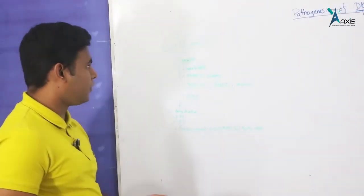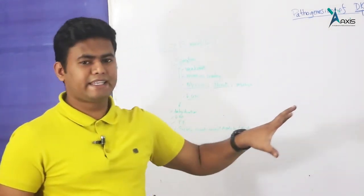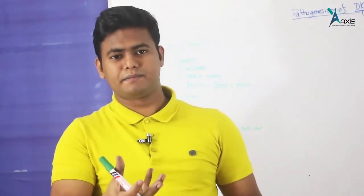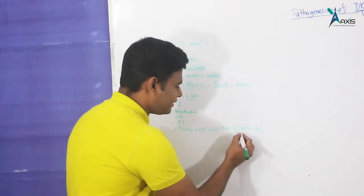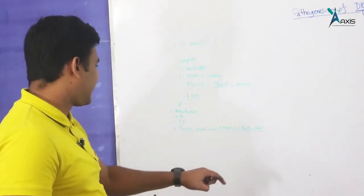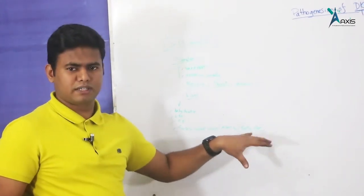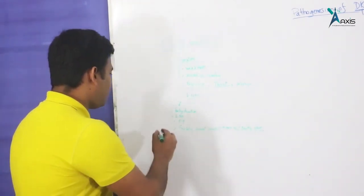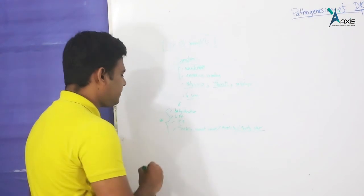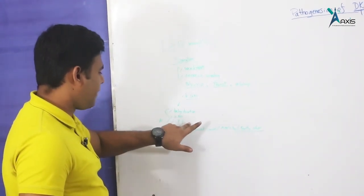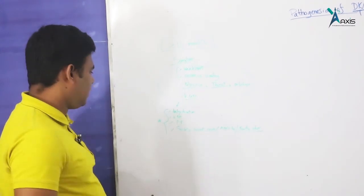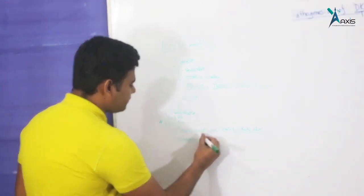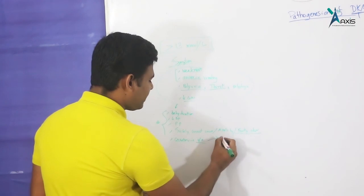This fruity odor comes from ketone bodies in the body — specifically acetone, which is released from the respiratory tract. Even at the bedside, you can detect this fruity odor on the patient's breath. If the patient has a catheter, you can monitor urine output, which may fall as the condition progresses.